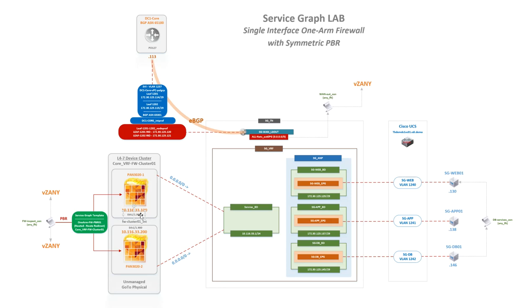Ethernet 1.1 with sub-interface 1.900 is used to connect for the service graph device configuration, and those interfaces will be defined as cluster interfaces. Because we are using symmetric PBR with more than one node, the device must be configured as unmanaged — that's the only supported mode. These are physical firewalls, though nothing stops you from using virtual firewalls. Some customers use a farm of virtual firewalls to distribute load intelligently across multiple firewalls, which is an elegant option.